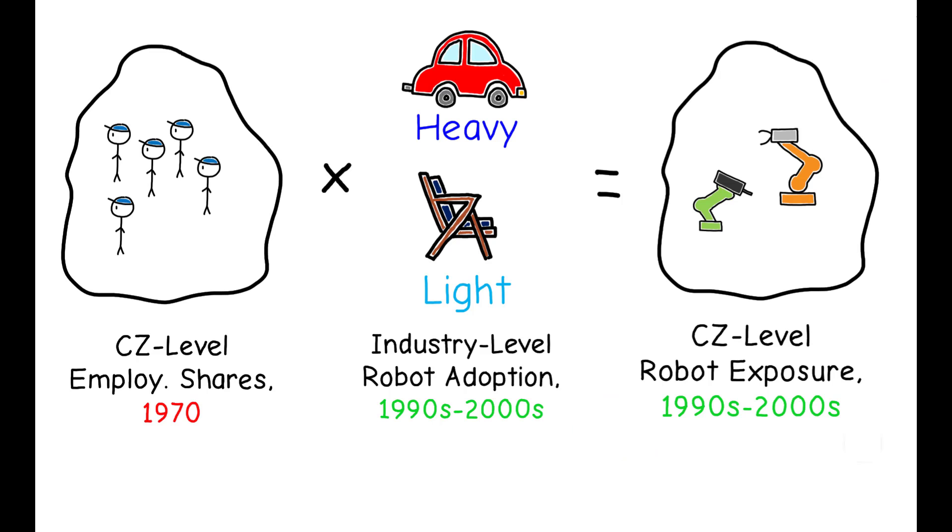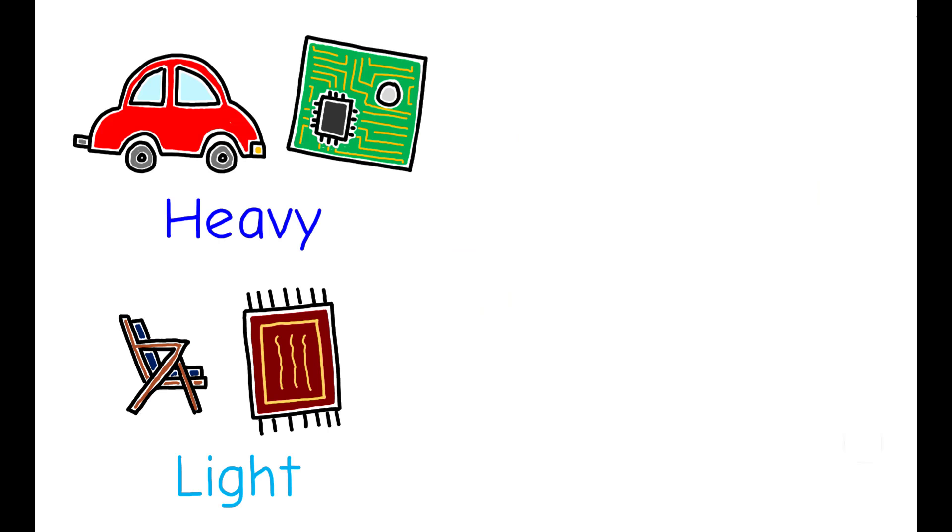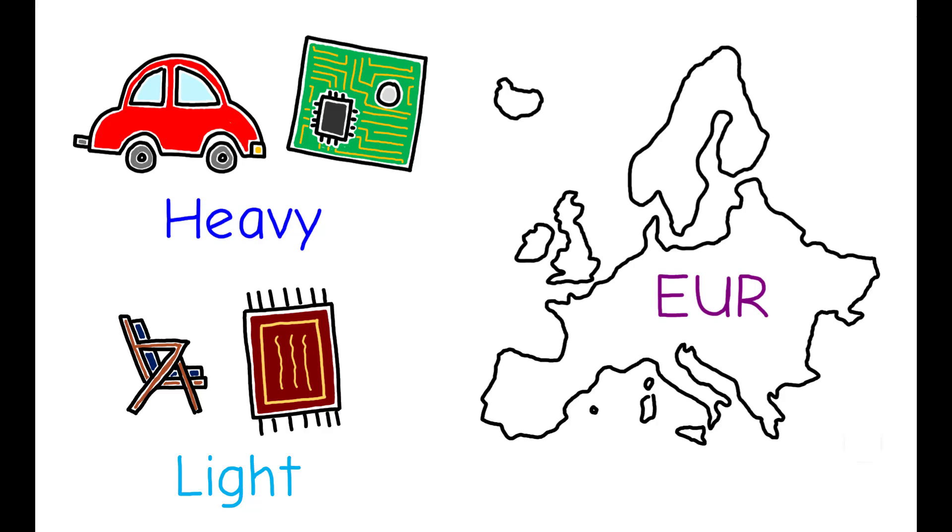To further ensure that this measure is not linked to contemporaneous local conditions, the authors rely on industry-level patterns of adoption from Europe, which leads the US in terms of robotics. The idea is to use differences in adoption rates derived from technological advances, rather than those derived from US-specific factors.